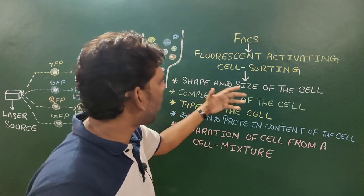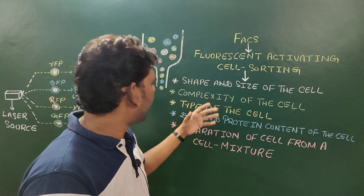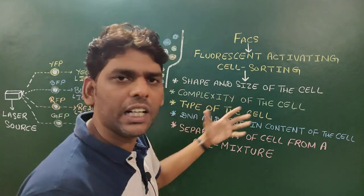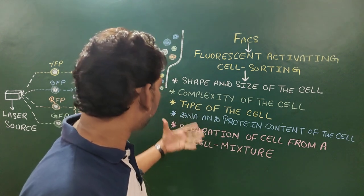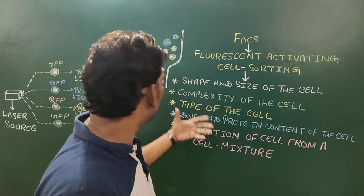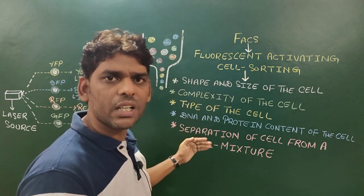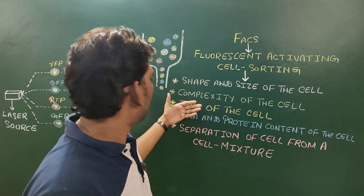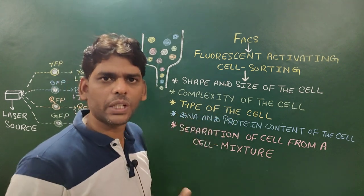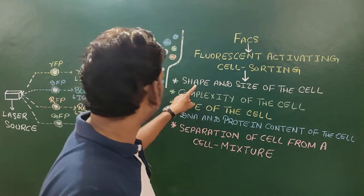Along with the shape and size and complexity of the cell, FACS is also used in the identification of different types of cells in a cell mixture. It is also used to determine the DNA and protein content of the cell, and it is used in the separation of different types of cells from a cell mixture. FACS uses different properties of the cell for each of these tasks: separation, shape/size determination, DNA/protein content, and cell identification.